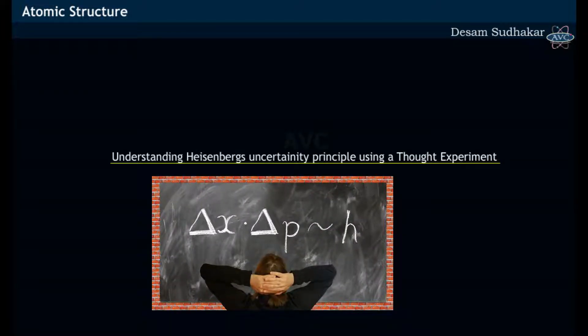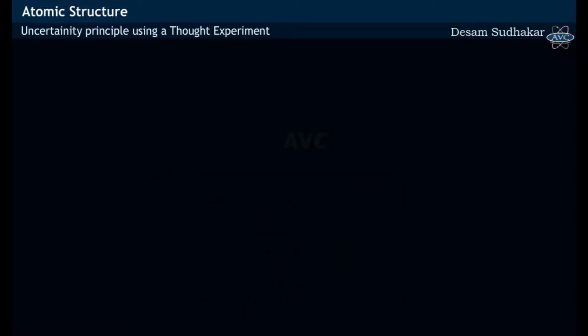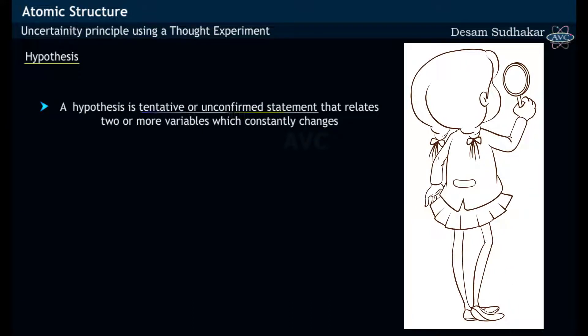Understanding Heisenberg's Uncertainty Principle using a Thought Experiment. Before going into the details of the thought experiment, let us know about hypothesis. A hypothesis is a tentative or unconfirmed statement that relates two or more variables which constantly changes.